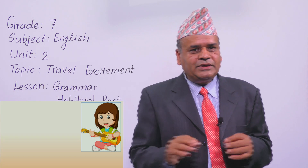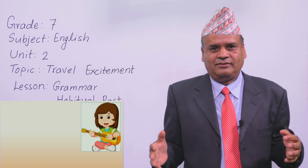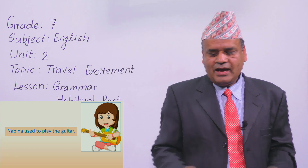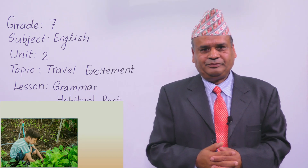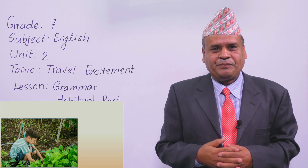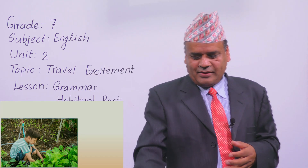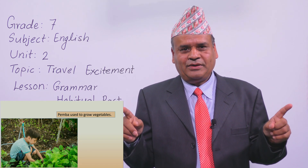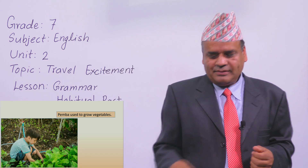And next — what do you see in the picture? The girl is playing guitar. Nobina used to play the guitar. She had the habit of playing guitar. And in the next picture, you see a boy growing vegetables, working in the kitchen garden maybe. He used to grow vegetables. He is Pemba. Pemba used to grow vegetables — that means in the past Pemba had that habit.